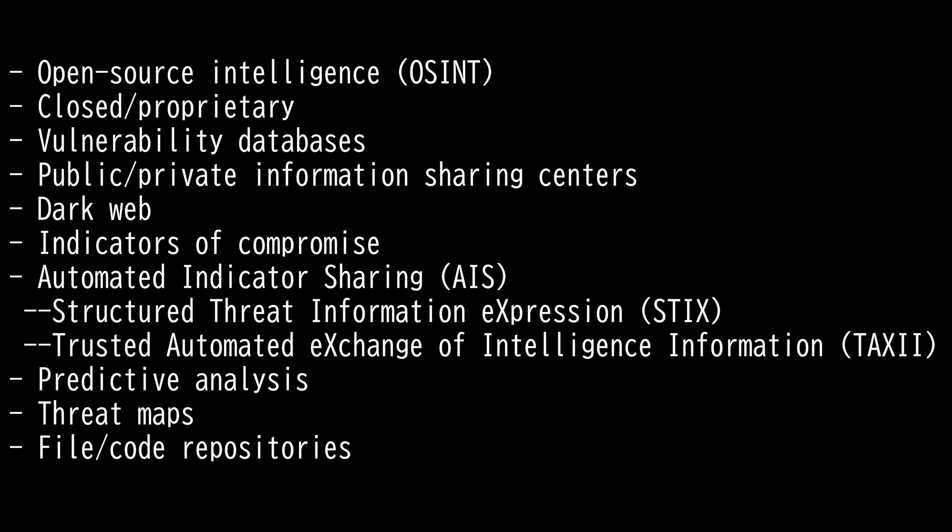Next, we have threat maps. Threat mapping falls under the term vulnerability mapping — you're basically trying to identify weaknesses in an environment to find flaws and other security concerns.